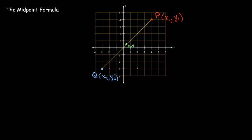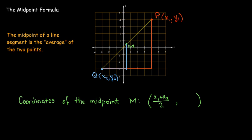The midpoint between P and Q is the point halfway from P to Q — the average point. To get its x-coordinate, take the average of the x-coordinates of P and Q. To get the y-coordinate, take the average of the y-coordinates. Thinking in terms of similar triangles, if M is the midpoint, then each coordinate of M is exactly the average of the corresponding coordinates of P and Q.